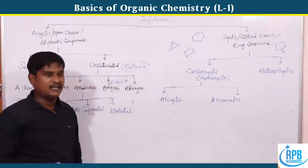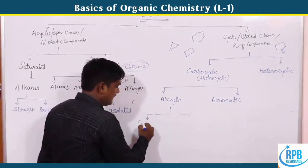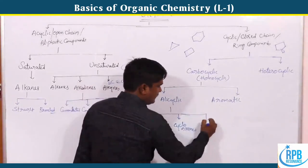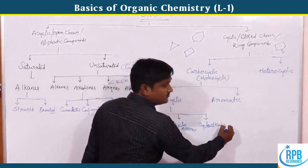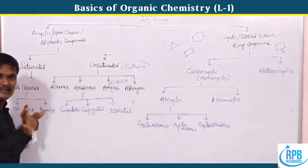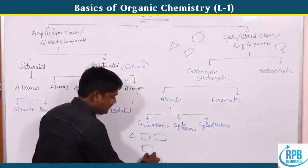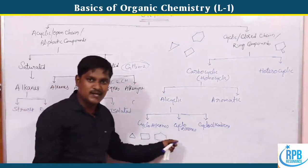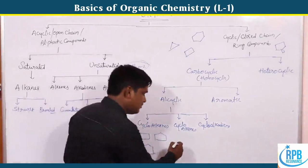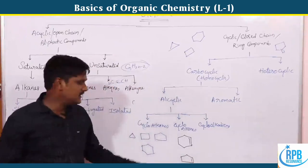Alicyclic compounds include cycloalkanes (only single bonds in the ring), cycloalkenes (one carbon-carbon double bond — for example cyclopentene and cyclohexene), and cycloalkadienes. Cycloalkanes like cyclopropane, cyclobutane, cyclopentane, and cyclohexane are alicyclic examples.